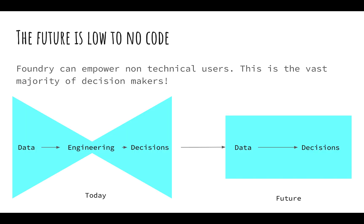The future is also low-code or no-code, and Foundry definitely empowers non-technical users. Palantir and Foundry do have some really amazing no-to-low-code features built in. The people who don't code, who are unable to do the engineering - that's the vast majority of decision makers in an organization. Today we definitely have a bottleneck: data is coming in at an astounding rate but engineering is absolutely the bottleneck. Putting that data through all the technical machinery to get it to a point where you can make a decision on it really slows down and hinders organizations.